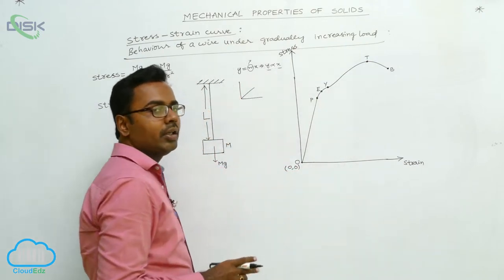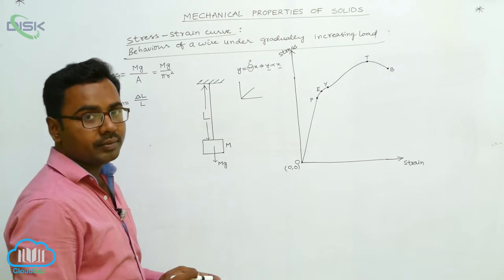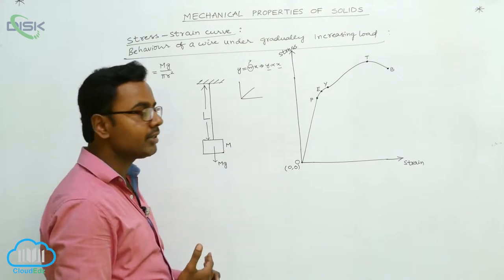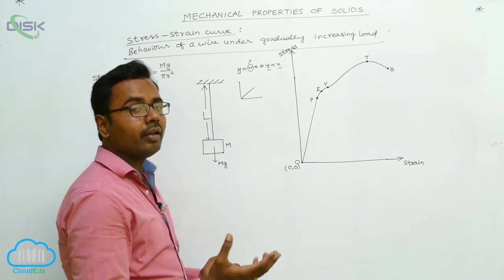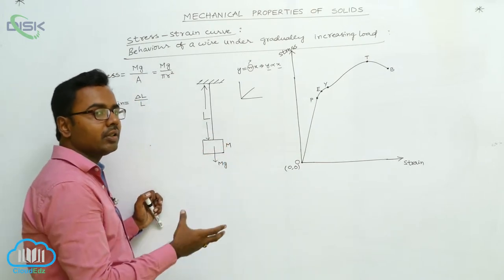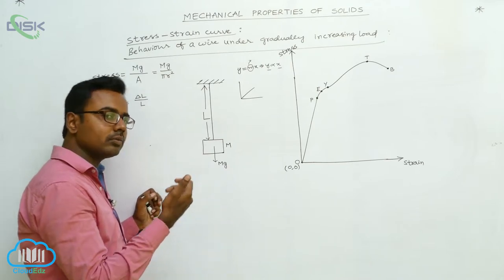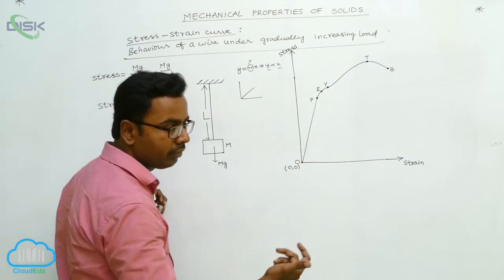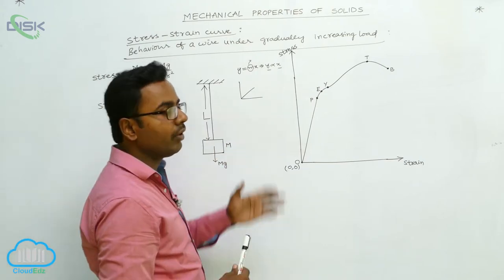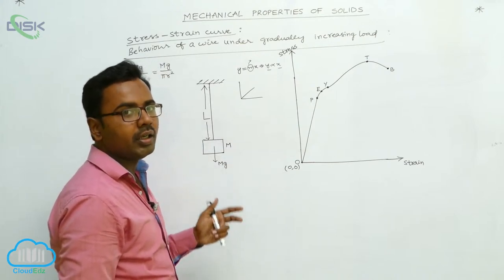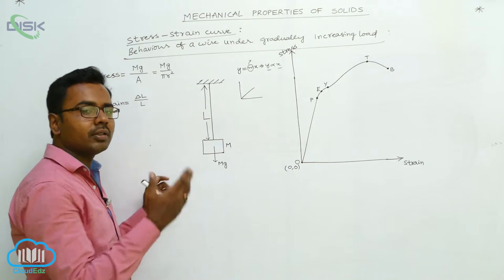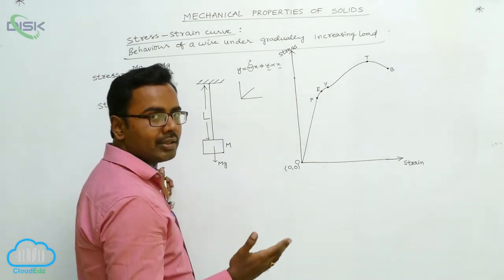The yield point is the point beyond which, even without an increase in load, the wire starts yielding — it elongates like a viscous liquid. Just as oil or water flows, the wire also elongates at the same load without any increase in load. That is why point Y is called the yielding point.